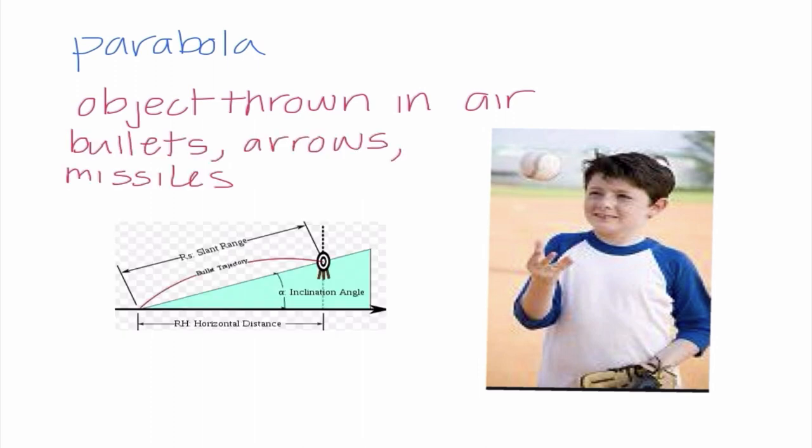This is also true when things like bullets, arrows, or missiles are shot. We can kind of see in this picture, the bullet trajectory, the bullet trajectory is not a straight line, it definitely is parabolic.